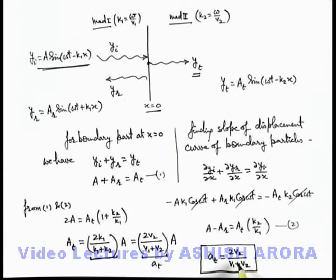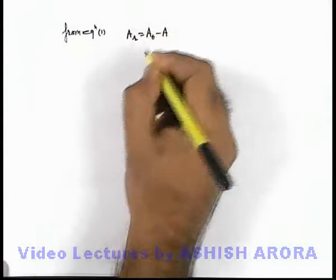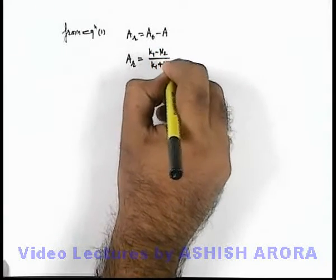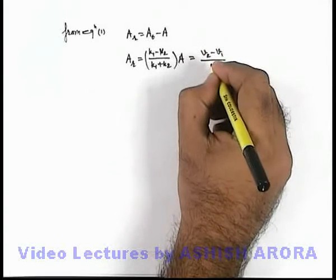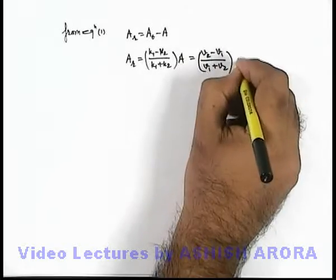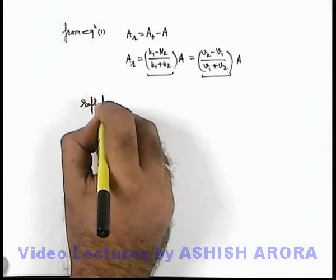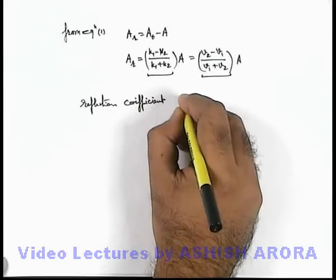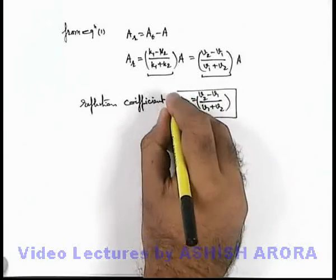Similarly, we can calculate the reflection coefficient. From Equation 1, Ay-r = Ay-t − Ay. Substituting the value of Ay-t, we get Ay-r = (k1 − k2)/(k1 + k2) × Ay. Substituting k1 = ω/v1 and k2 = ω/v2, this gives Ay-r = (v2 − v1)/(v1 + v2) × Ay. So the reflection coefficient is (v2 − v1)/(v1 + v2), and this you should keep in mind.